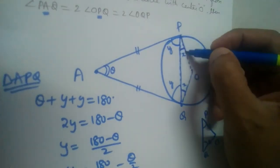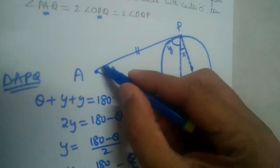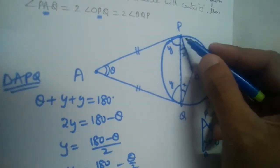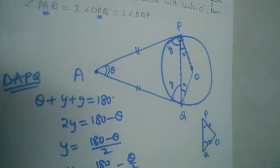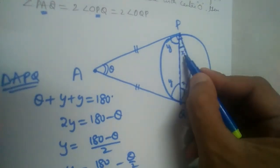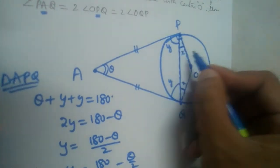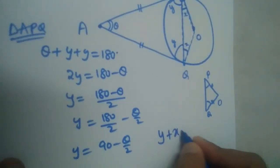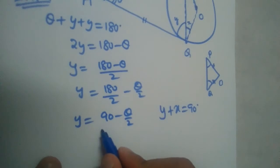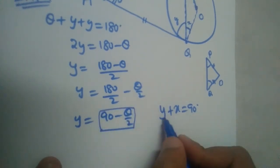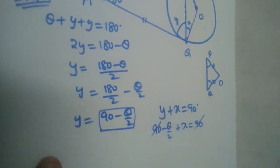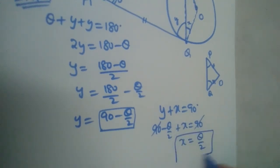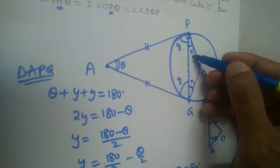Now, observe that OP is a radius and AP is a tangent. We have learned that a radius and tangent are always perpendicular to each other, so the angle at P is 90 degrees. Therefore, y plus x equals 90 degrees. Substituting y equals 90 minus theta by 2: 90 minus theta by 2 plus x equals 90. The 90s cancel, so x equals theta by 2.